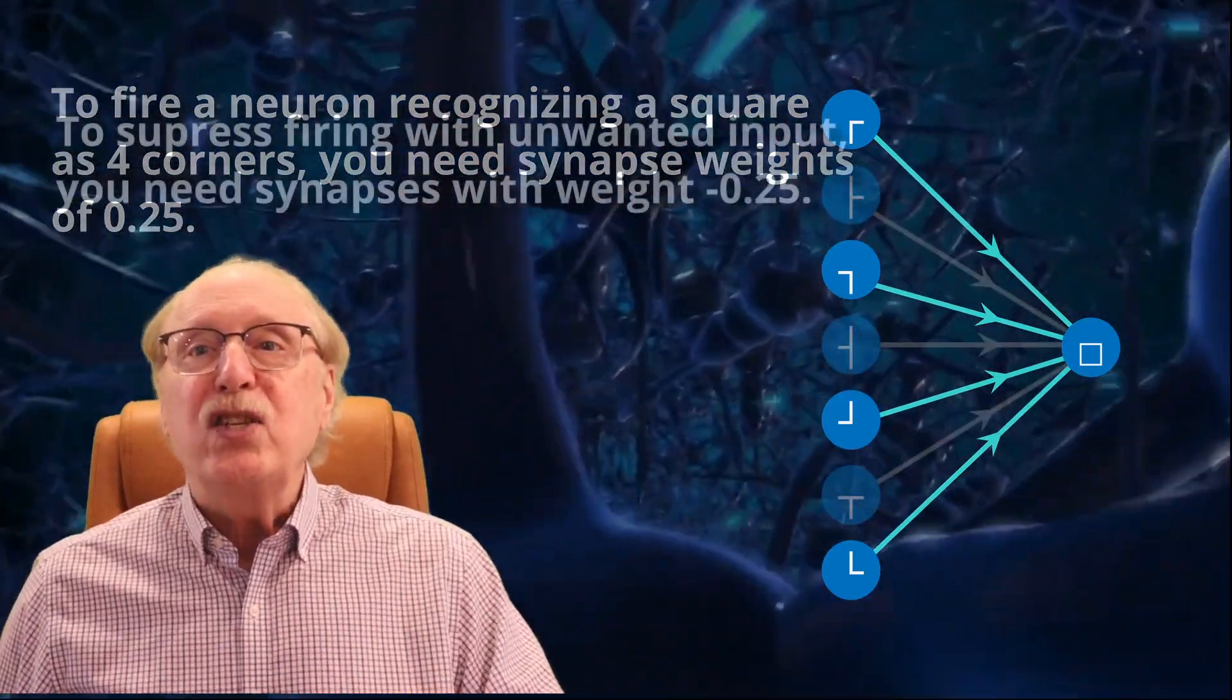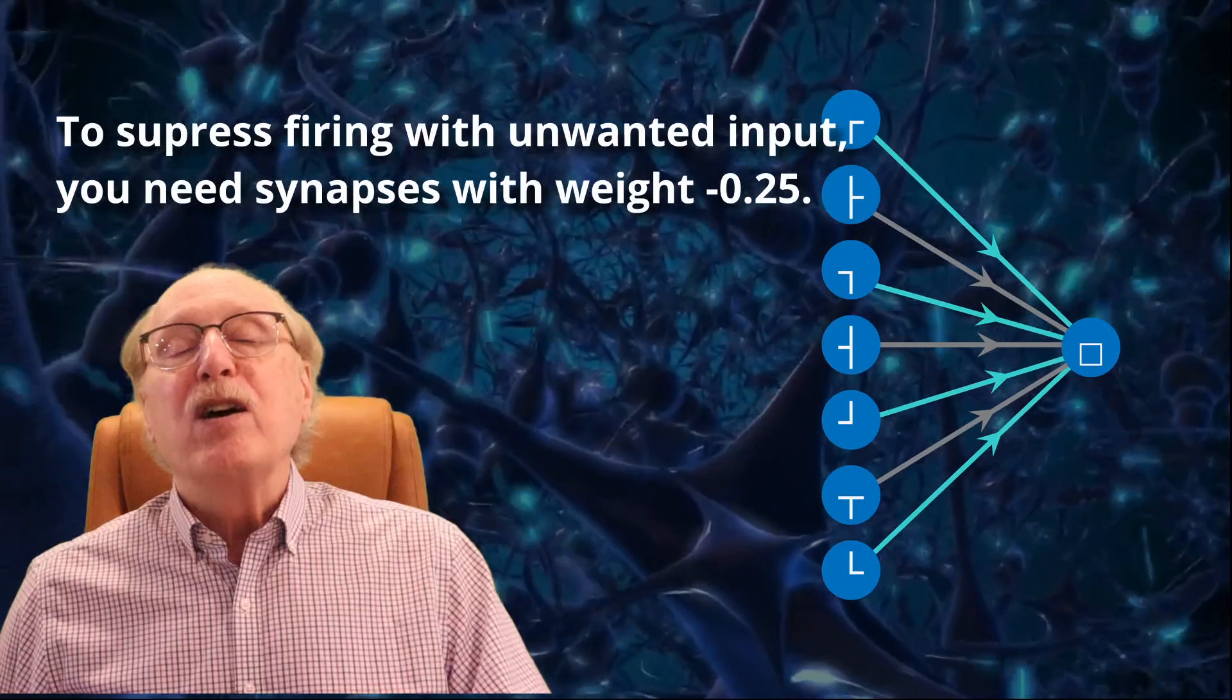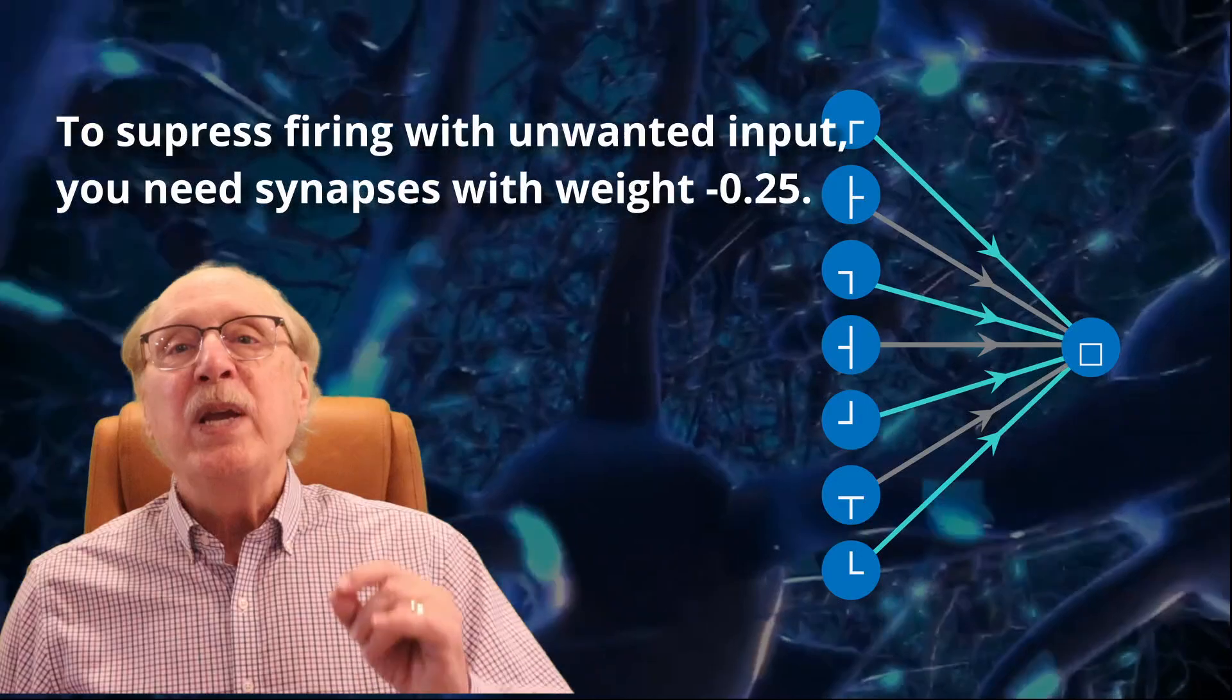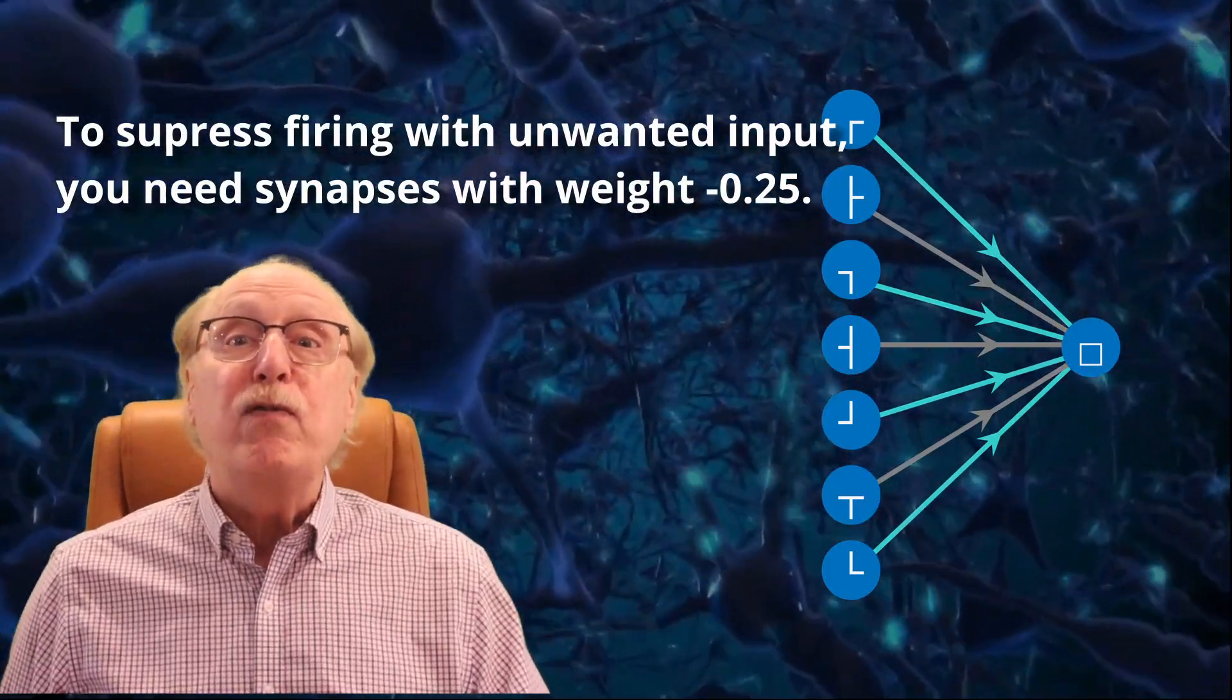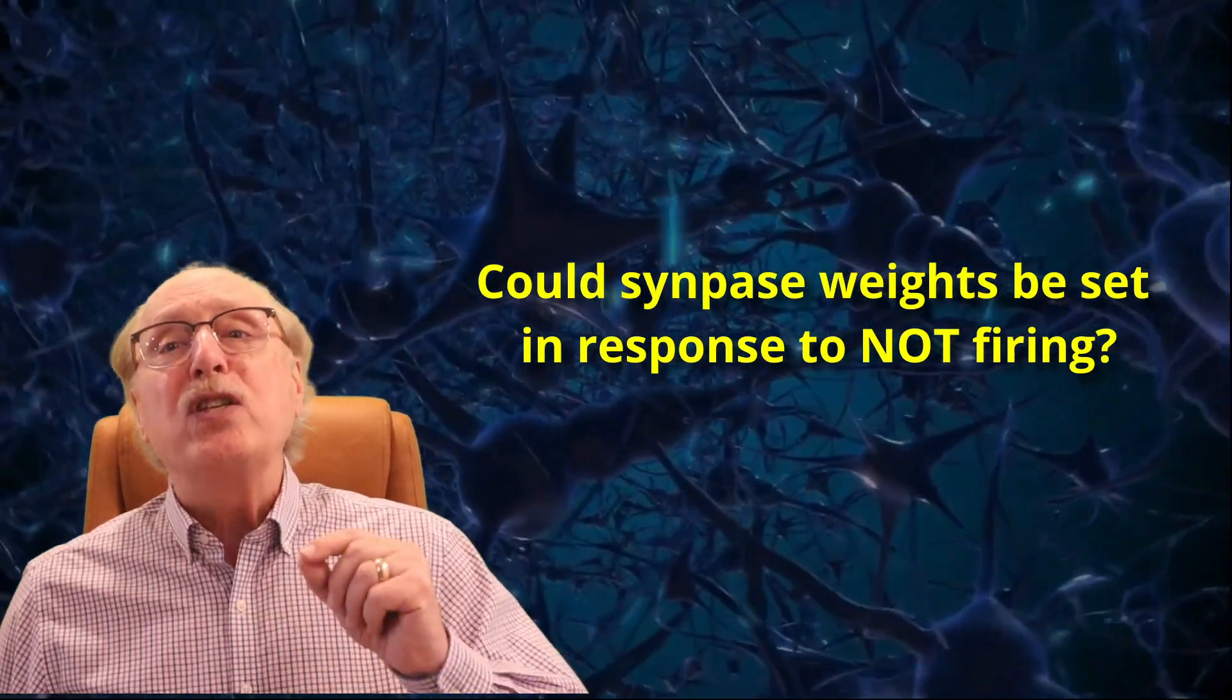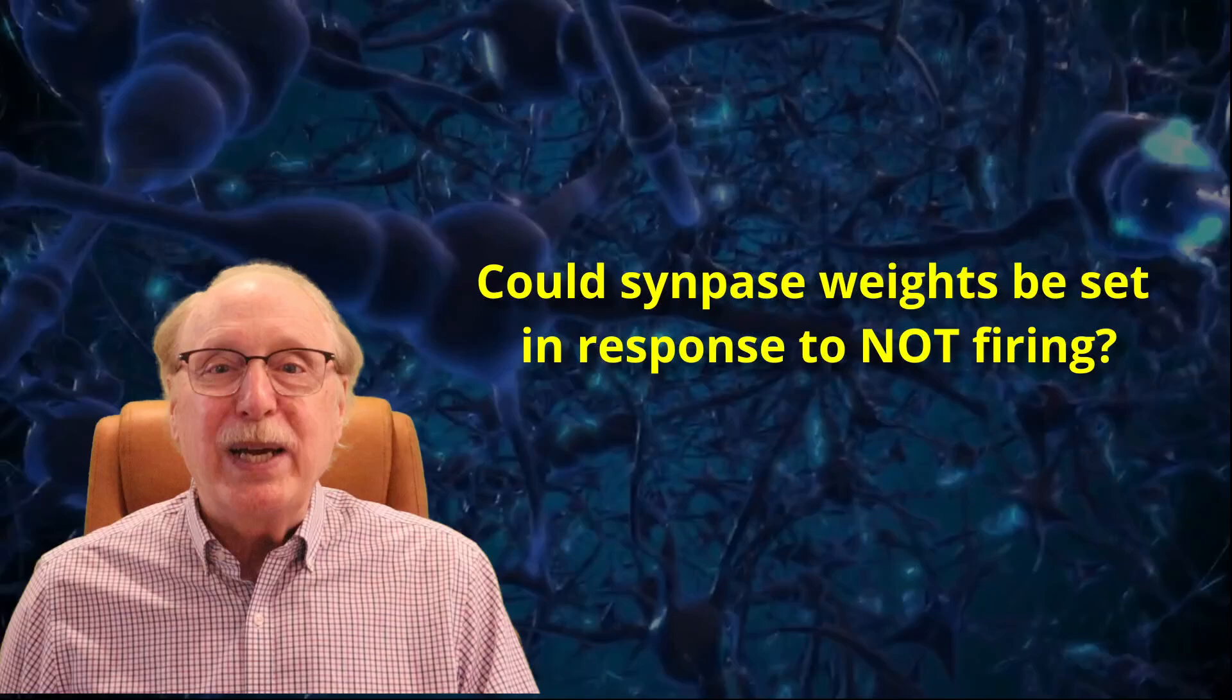But if we extend this scenario to say that we want to recognize a specific pattern of four firing inputs out of a set of more inputs, and the other should not be firing, we'd like the other inputs to gravitate toward an inhibitory weight of minus 0.25. That way, if our four desired neurons fire but one extraneous input also fires, our target will be suppressed from firing immediately. Hebbian learning does not address this scenario because it depends on setting a synapse weight based on a neuron's not firing. We'll have to speculate on an alternative mechanism in the future.